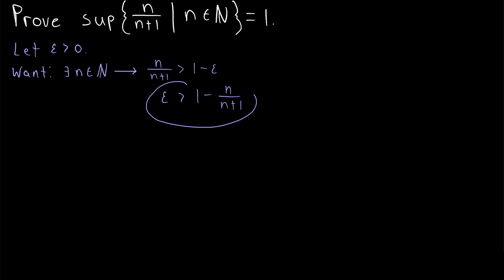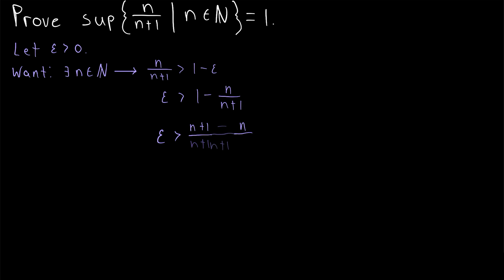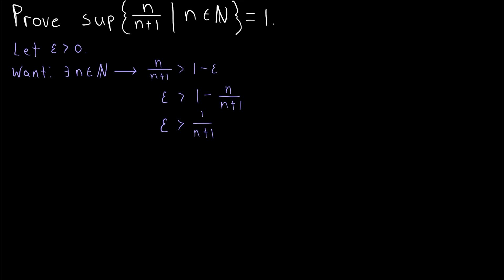We can simplify further by writing 1 as n plus 1 over n plus 1 so we have common denominators, giving epsilon is greater than n plus 1 over n plus 1 minus n over n plus 1. Combining into a single fraction gives n plus 1 minus n over n plus 1, and the n's cancel, leaving epsilon is greater than 1 over n plus 1. Multiplying both sides by n plus 1 and dividing by epsilon gives n plus 1 is greater than 1 over epsilon, and subtracting 1 gives n is greater than 1 over epsilon minus 1.